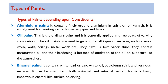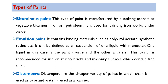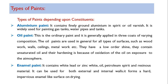Now, types of paints — based on the constituent or base material used for preparation, there are different types: aluminum paint, oil paint, enamel paint, bituminous paint, emulsion paint, and distempers. In this video we shall discuss distempers in detail.